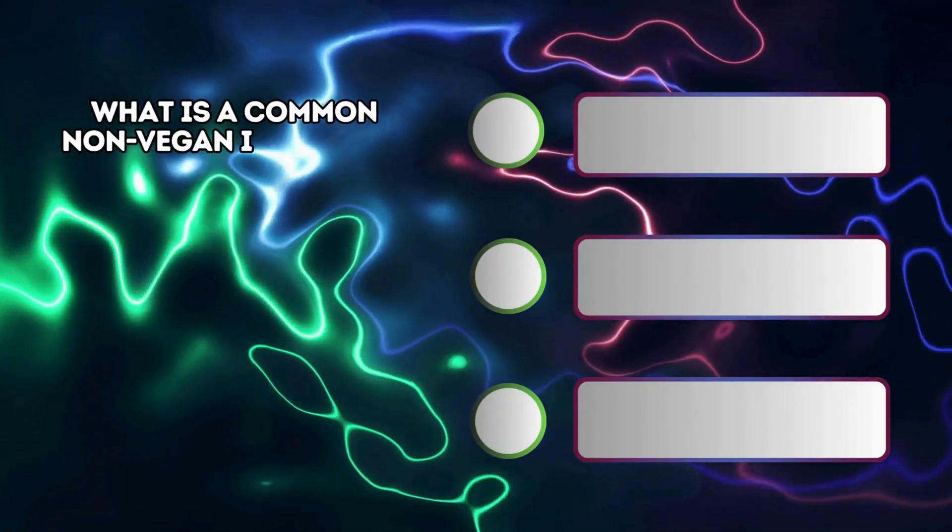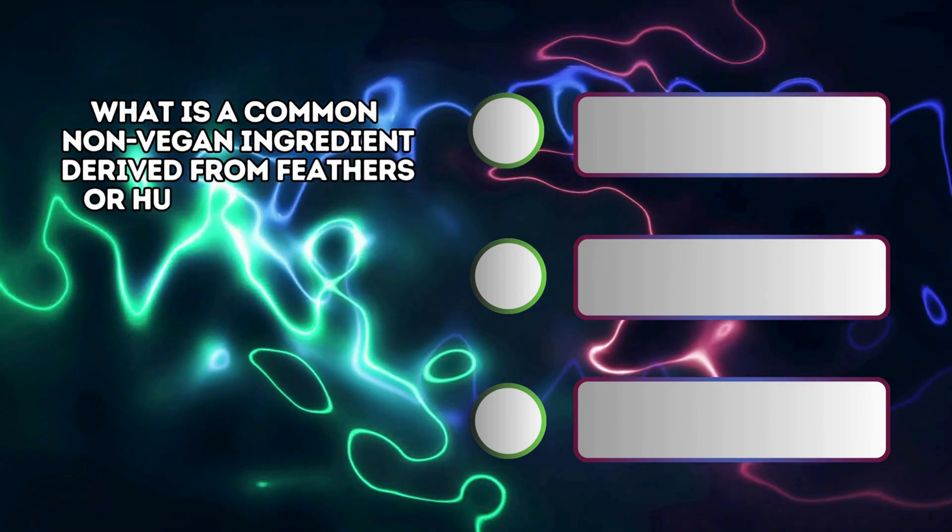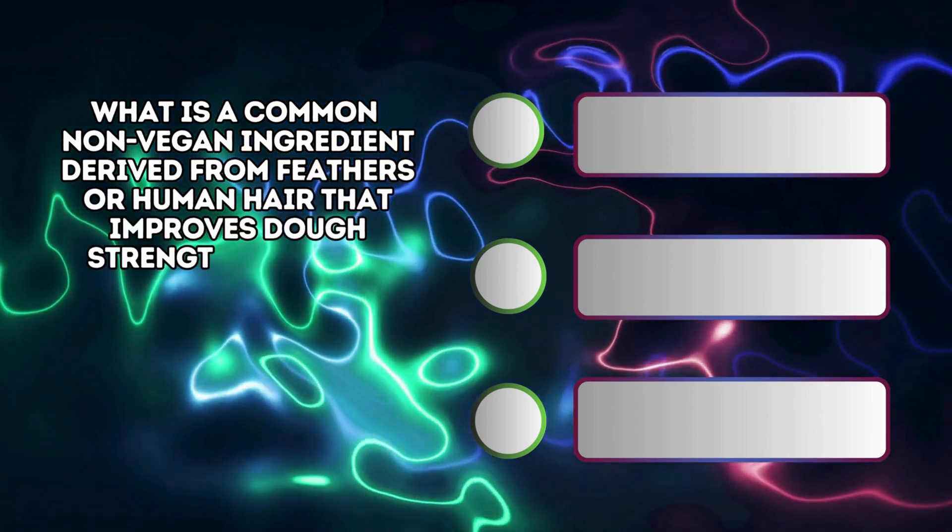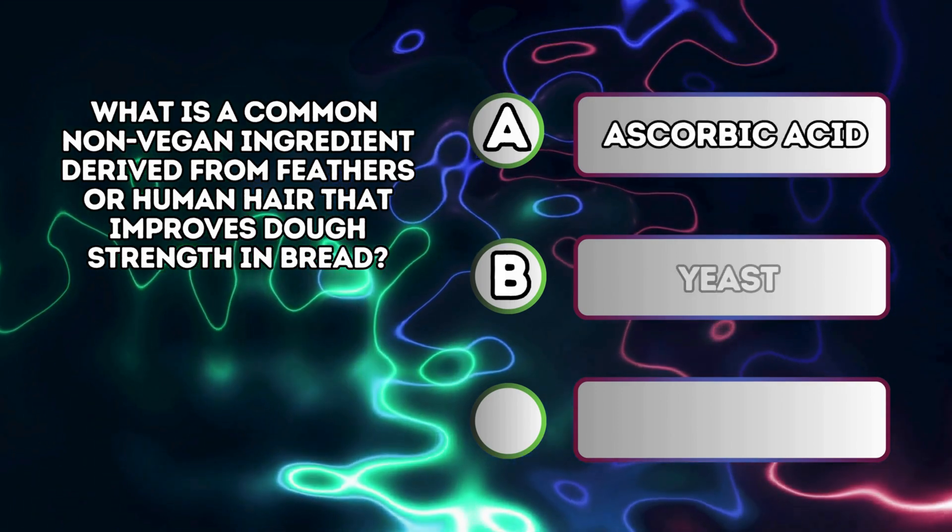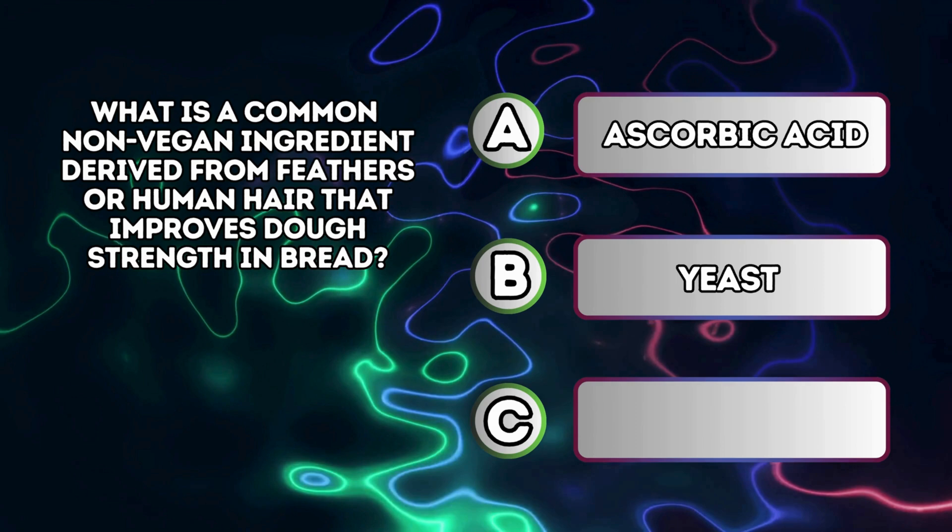What is a common non-vegan ingredient derived from feathers or human hair that improves dough strength in bread? A. Ascorbic acid B. Yeast C. L-Cysteine